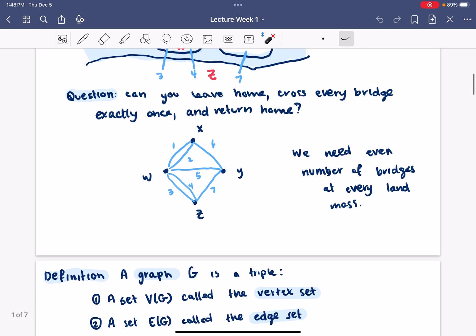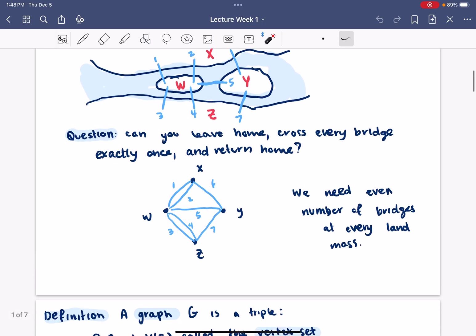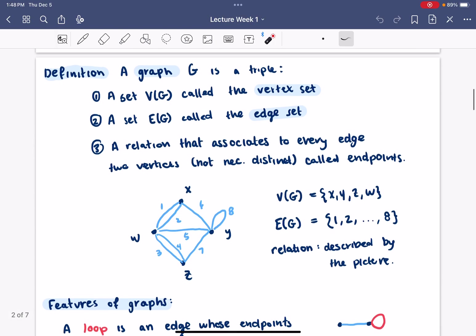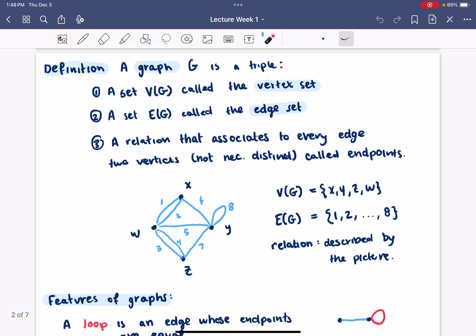I'm going very quickly because I'm just trying to summarize what we did on that first day. So, then we defined a graph. This is a triple: it's going to consist of a set called the vertices, another set called the edges, and a relation that associates to every edge two vertices.